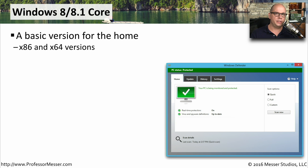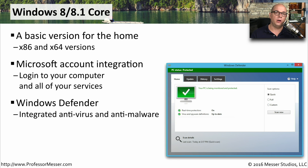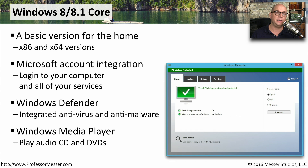The Core version of Windows 8 and 8.1 is really designed for the home. There are both 32-bit and 64-bit versions of this operating system, and it also integrates into your Microsoft account, so you can log on to one account and access your computer and all the services you might need. This edition also includes a built-in antivirus and anti-malware application called Windows Defender, and Windows Media Player is built into the operating system for playing audio CDs and DVDs.